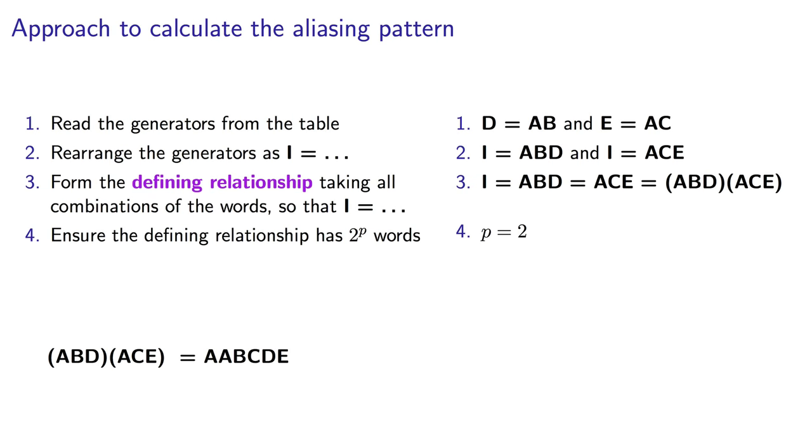Next, we can use the rule that two sequential letters are equal to their identity. So, that in fact becomes I, B, C, D, E. Now, remember that I is just a column of plus 1 entries. So, it's kind of redundant when it's multiplied with other letters. So, we can drop that and simplify it to B, C, D, E.